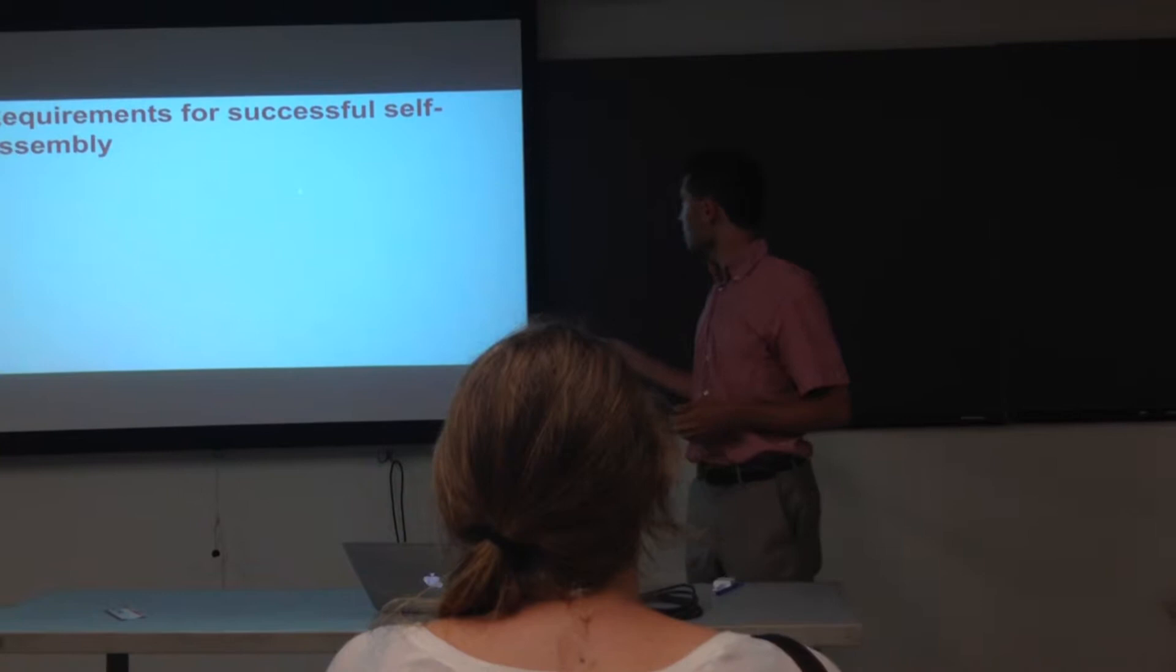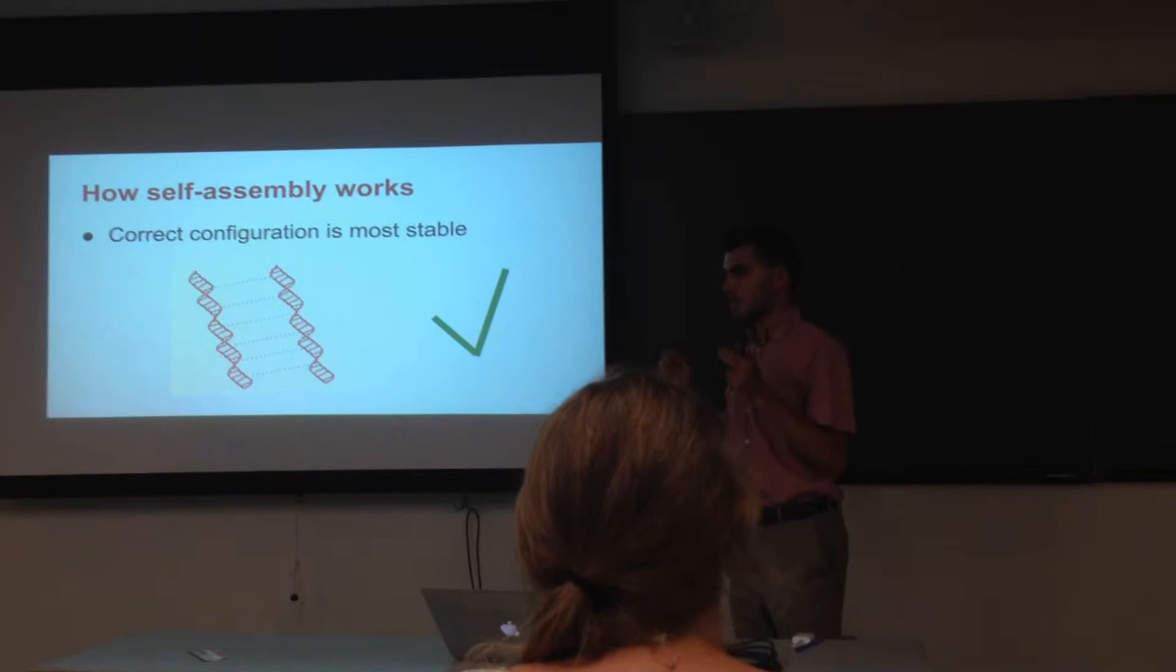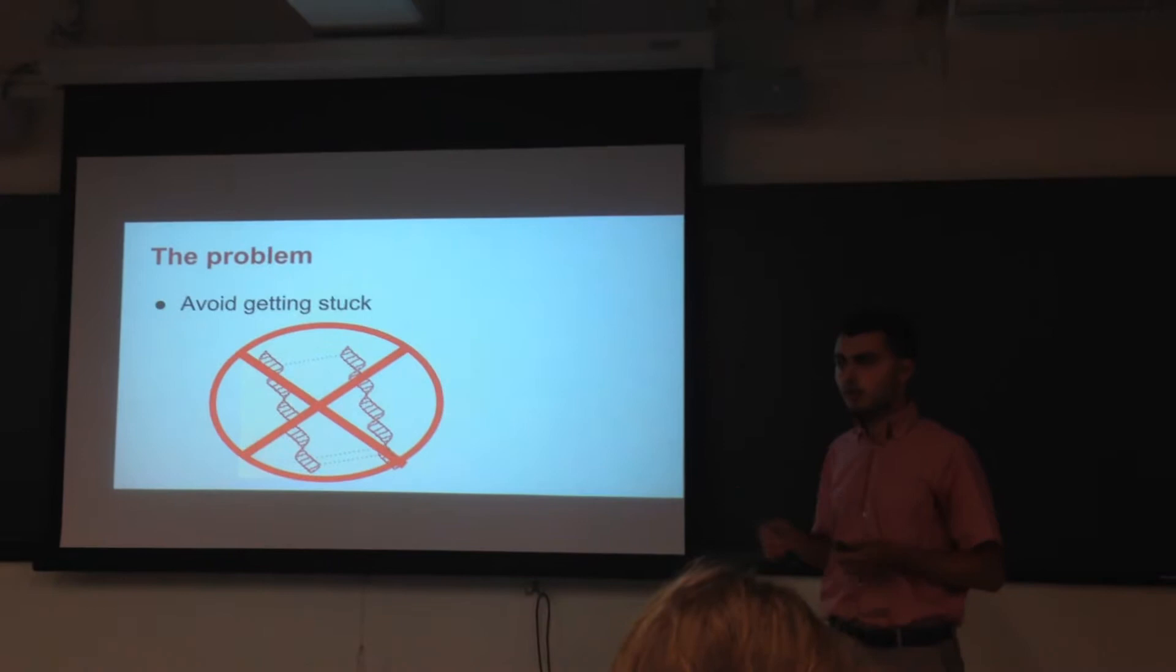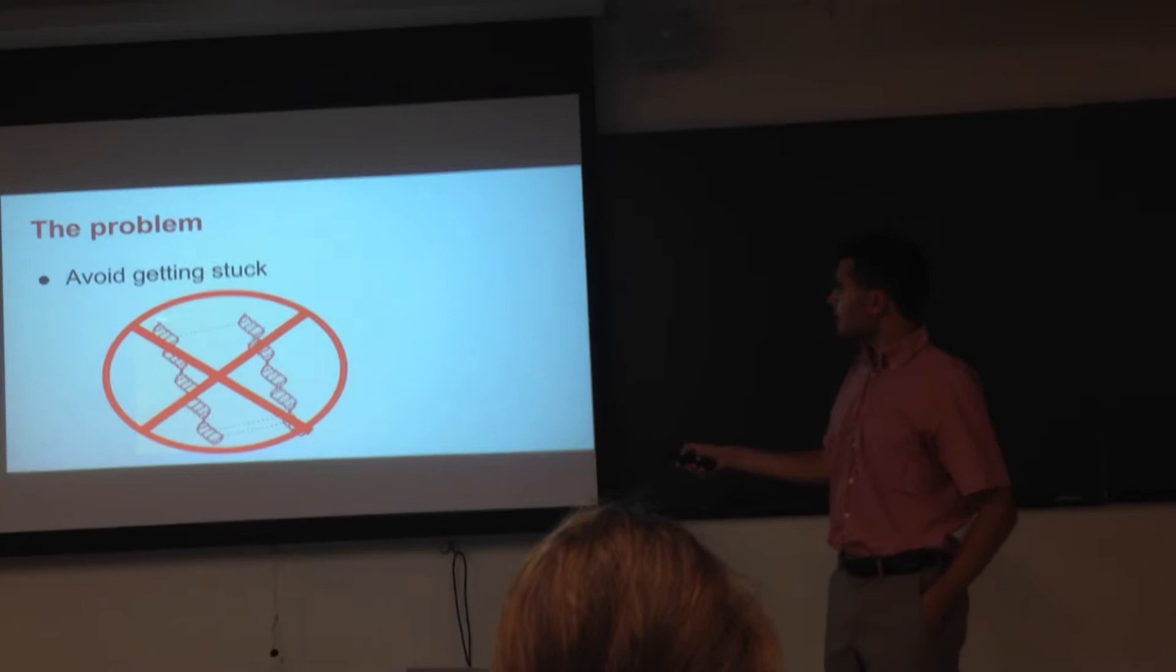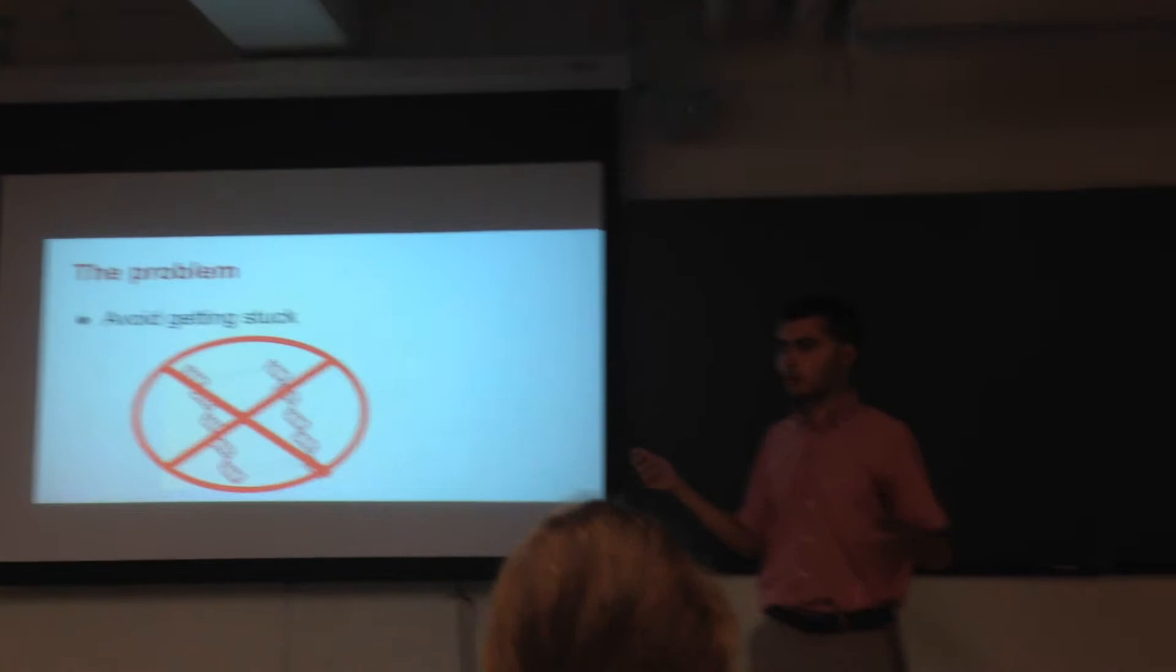So what are the requirements for a successful self-assembling system? We talked about one of them, right? The correct configuration is most stable. For example, in chromosome pairing, chromosome 1 must be most stable when it's paired with chromosome 1 from the mother. But then another problem, perhaps even less understood, is you can't get stuck. So what that means is, say maybe this is chromosome 1 from the father and this is 3 from the mother. They might have some regions in which they match just by chance here and here. But that could be just by accident. You don't want to get stuck, otherwise it's going to take too long for one to find one.